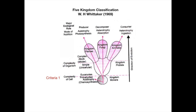The eukaryotes are further classified based on the second criteria. The second criteria is the complexity of the organism — whether the organism is unicellular (simple) or multicellular (complex). Based on this criteria, organisms which are unicellular and eukaryotic are placed in kingdom Protista. Thus kingdom Protista belongs to the unicellular eukaryotes. Multicellular eukaryotes are left out for further classification.